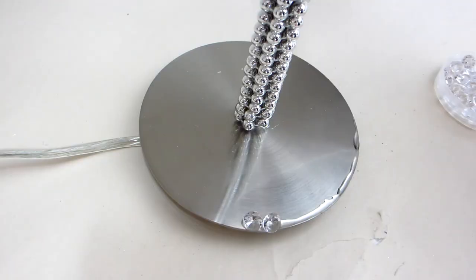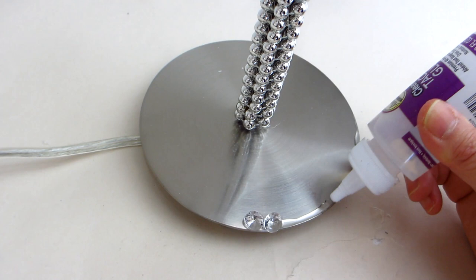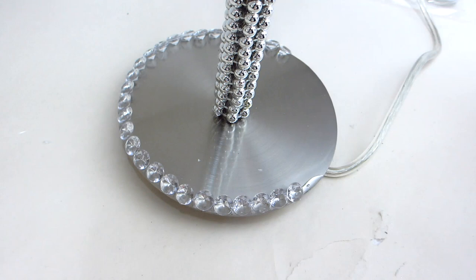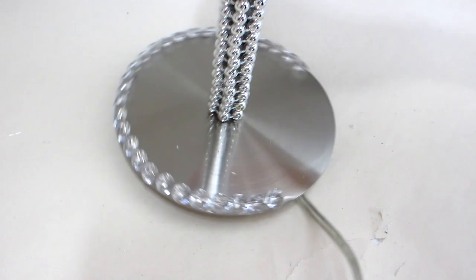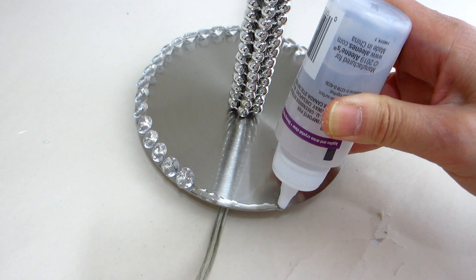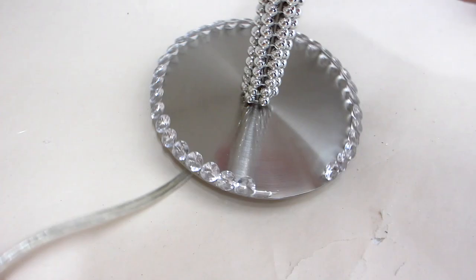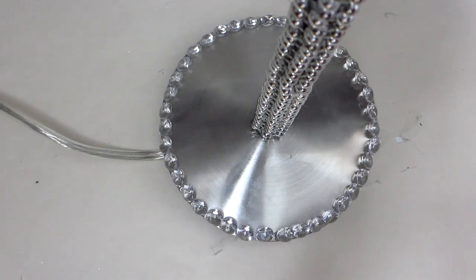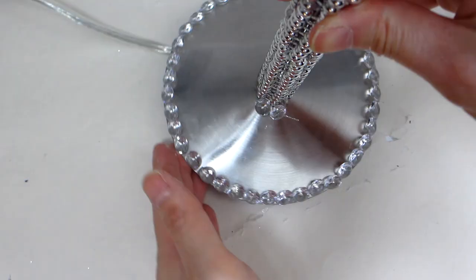Next apply some tacky glue to the base of the lamp post all around the edge of the base. This is where we will place the mini rhinestone gems to create a border. Then repeat the same step to apply mini rhinestone gems along the inner portion where the lamp post is.